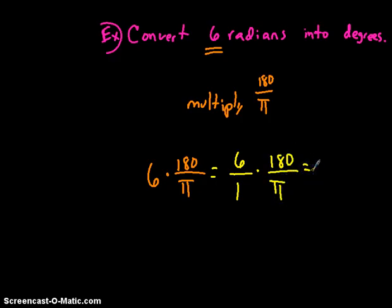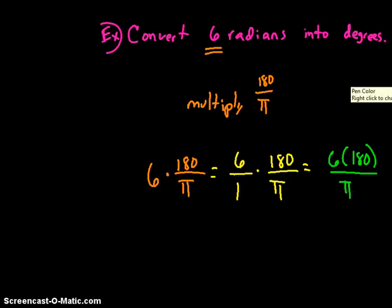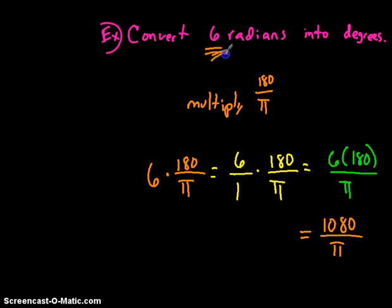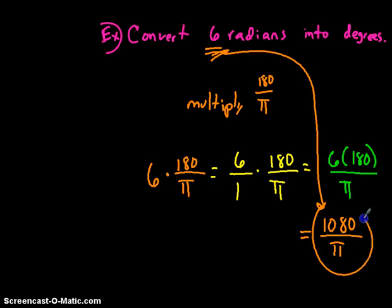When you multiply that out you get 6 times 180 divided by pi. Six times 180 is a really big number — it's going to wind up being 1080 divided by pi. So 6 radians is the exact same thing as 1080 over pi. Some answers come out like that.